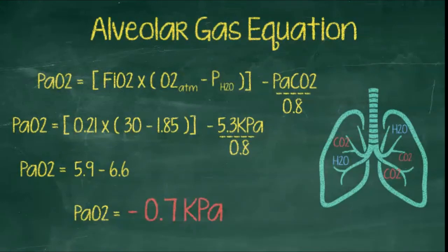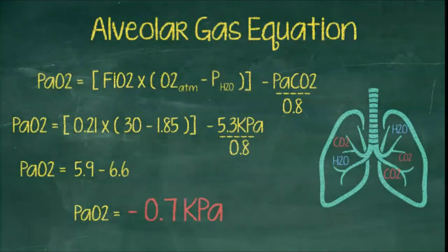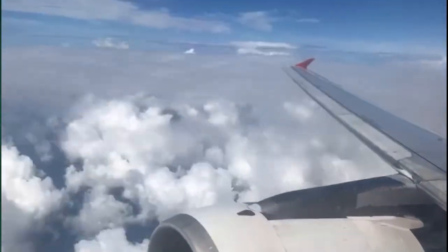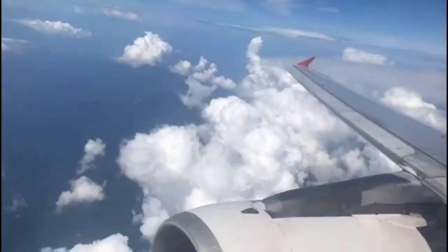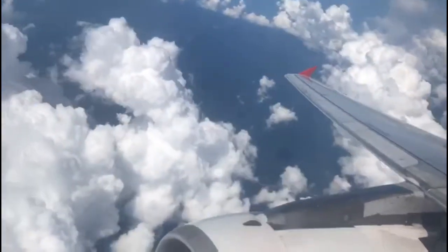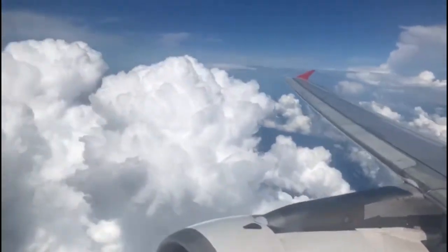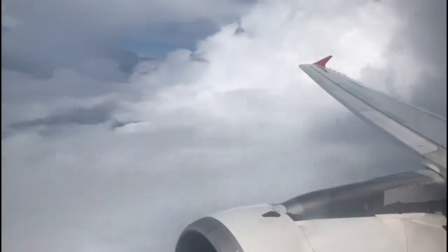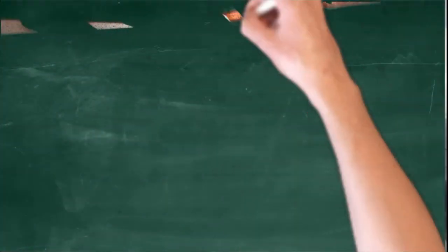Fortunately, most passenger airliners are pressurized to the equivalent of an altitude of six to eight thousand feet. But now you know why the safety briefing on the airplane states that you should put your own oxygen mask on first before trying to do anything else. At 30,000 feet you'll have at best three minutes before you become unconscious without supplemental oxygen.